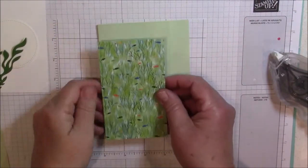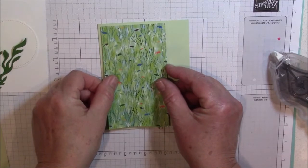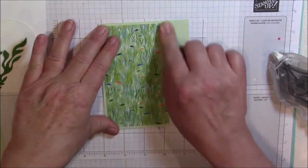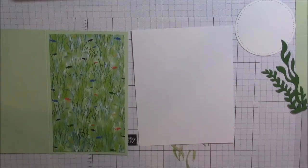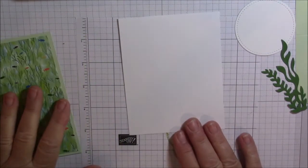We are going to adhere that onto the part that we cut off, making sure that our edges are all even. We have the front of our card assembled so we are going to do the inside of the card next.